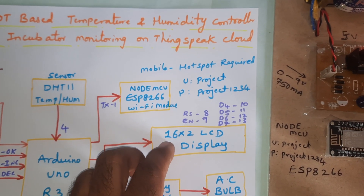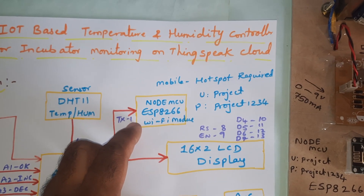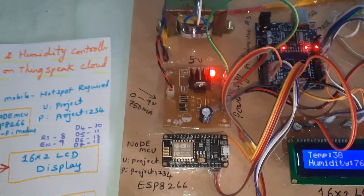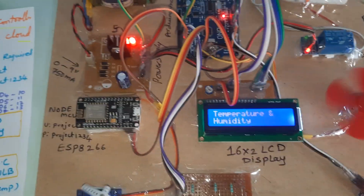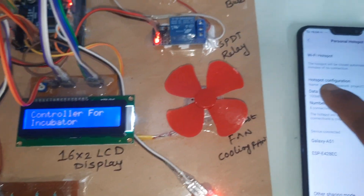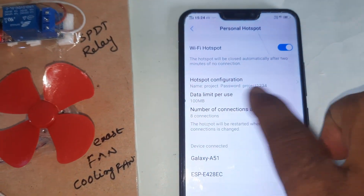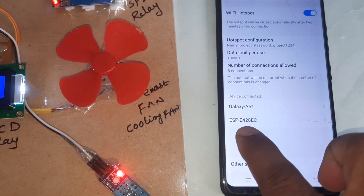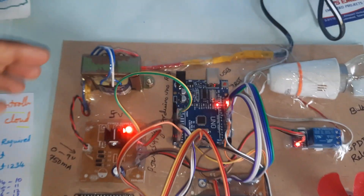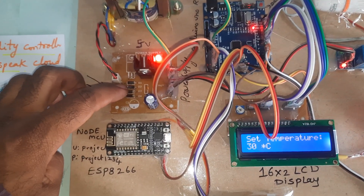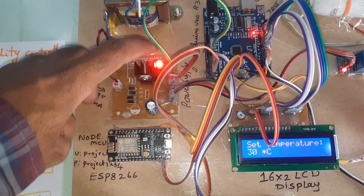Pins 8 through 13 are used. The NodeMCU ESP8266 requires mobile internet. Now connecting the mobile hotspot — network: project 1234. The ESP8266 is connected. The power supply uses a 230V input, step-down transformer giving 9V output, through a bridge rectifier, filter capacitor, and 7805 voltage regulator.